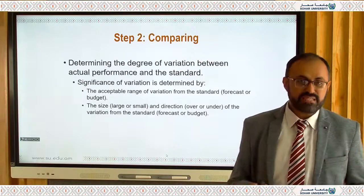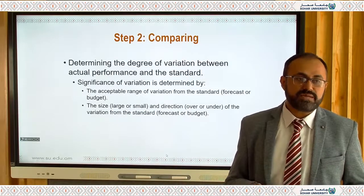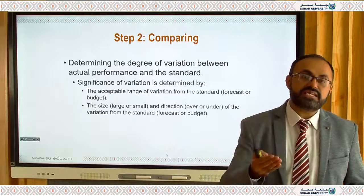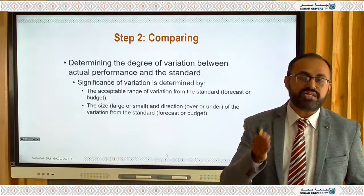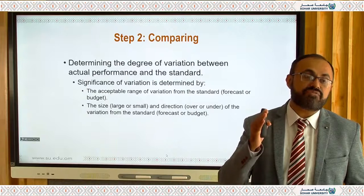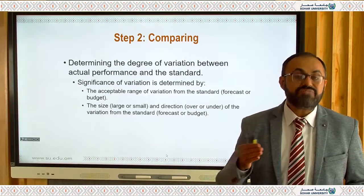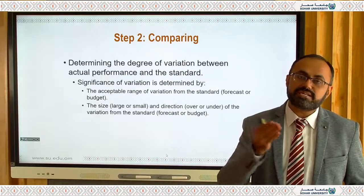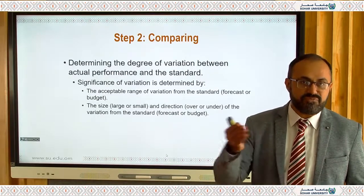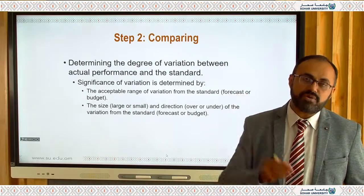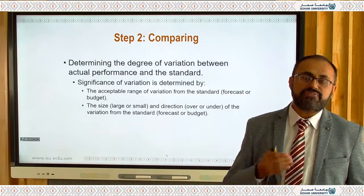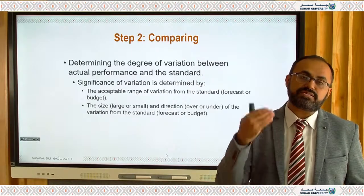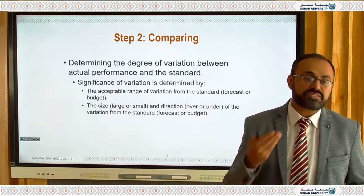The second step is comparing — determining the variation between actual and planned performance. For example, if you set a target of ten thousand Omani Rials with an acceptable variation of five percent, but the actual sale is only five thousand — a fifty percent drop — you are very concerned. This comparing step helps identify and address the cause of the decline in sales.